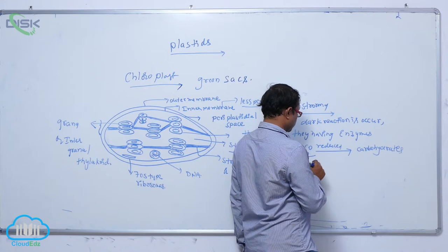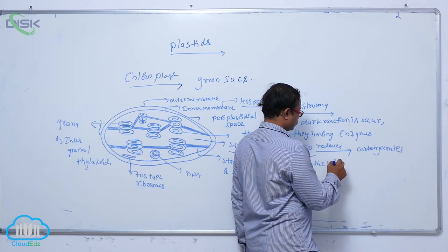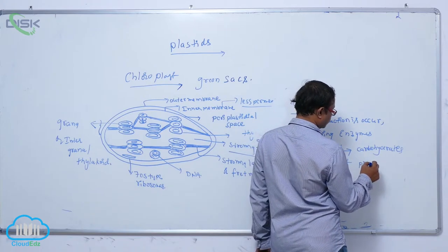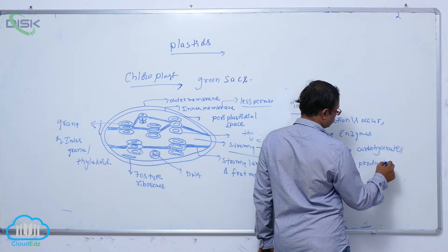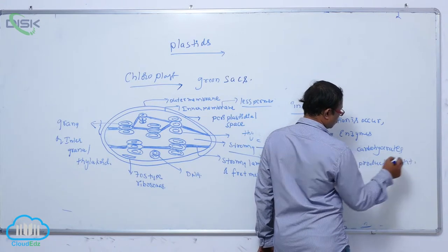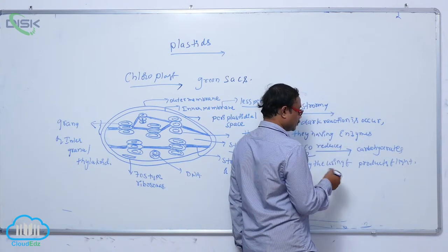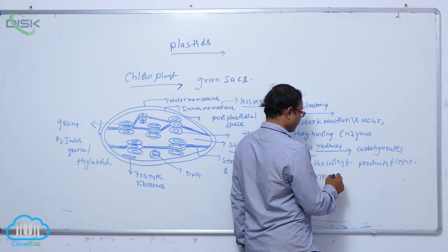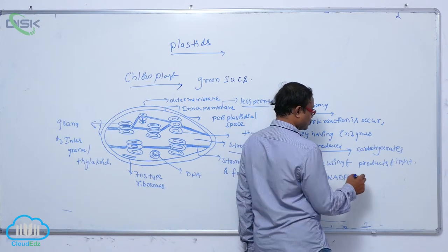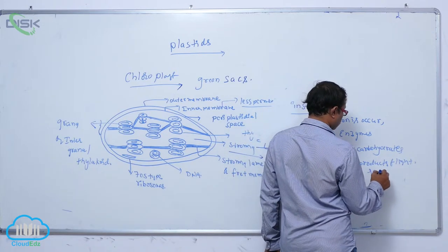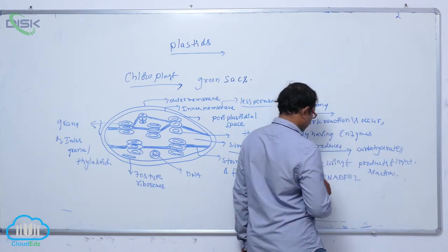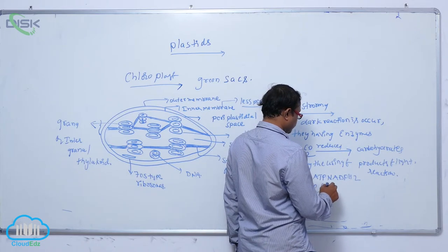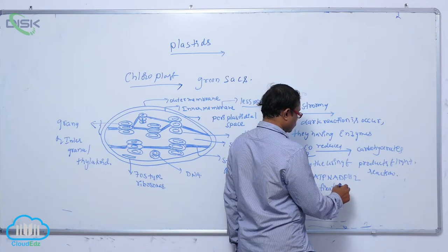By the using of products of light - these products of light are ATP, NADPH2, they are the products of light reaction. So this process is known as carbon dioxide fixation.